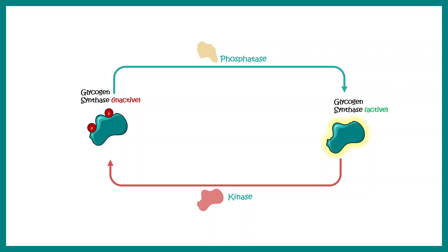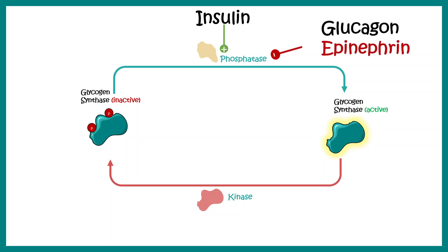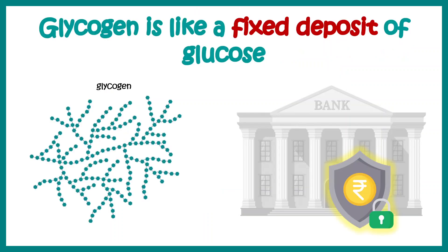Hormonal regulation provides this context. Hormones such as insulin positively regulate the phosphatase enzyme, thereby making glycogen synthase active by removing phosphate residues. Other hormones such as glucagon and epinephrine negatively regulate the phosphatase enzyme while positively regulating kinase, so glucagon and epinephrine tend to inactivate glycogen synthase, preventing the glycogenesis pathway.